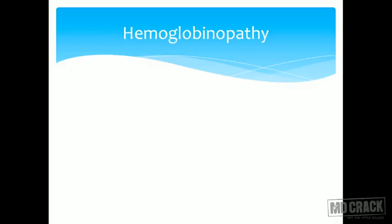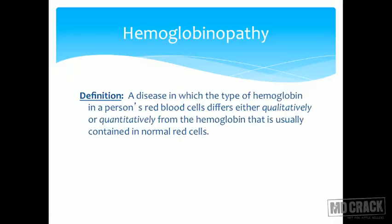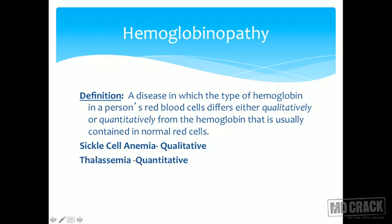We come to what are called hemoglobinopathies — a disease in which the type of hemoglobin in a person's red blood cells differs either qualitatively or quantitatively from the hemoglobin usually contained in normal red cells. I'll be looking at the qualitative one, which is sickle cell anemia, and the quantitative one, which is thalassemia.